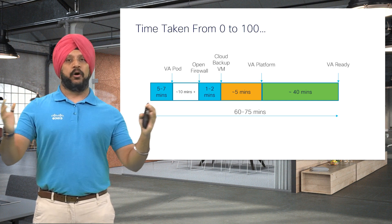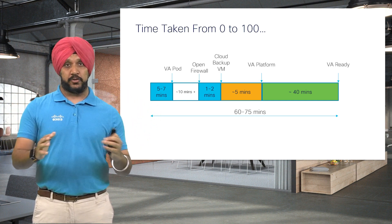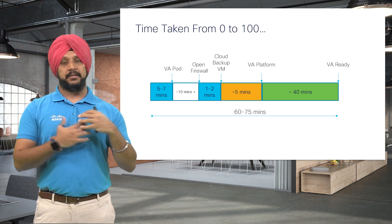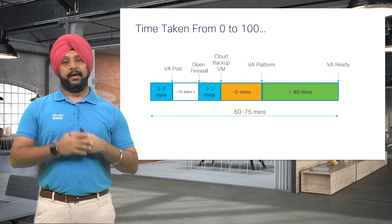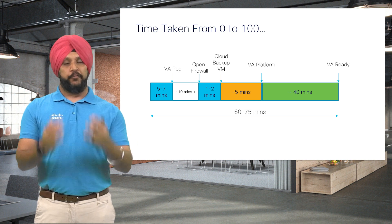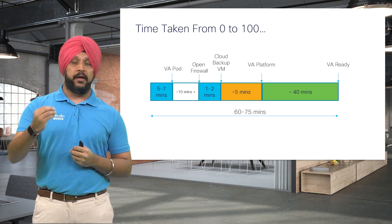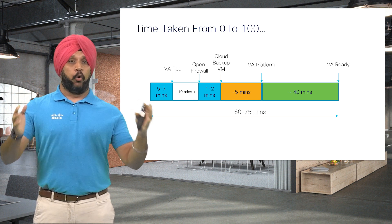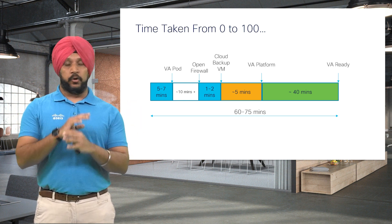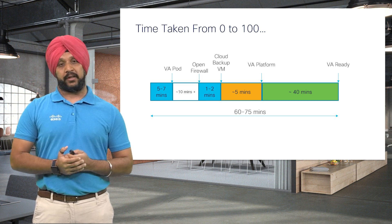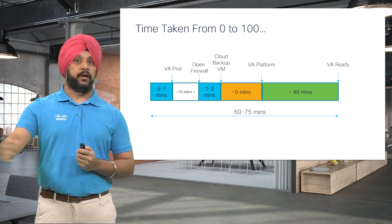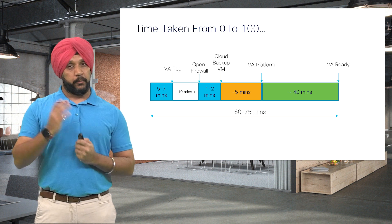Here is a timeline of what it takes to get going with Catalyst Center. Earlier, it might have taken weeks to order the device, ship the physical appliance, get it racked and stacked, cabled, figure out networking, and then go through installation. With Launchpad and AWS, we can create a pod in a few minutes, open the firewall ports on your enterprise site, and within 60 to 75 minutes you are ready to perform all use cases on Catalyst Center. This is massive time-saving, and we have 100-plus customers today deploying Catalyst Center on AWS.